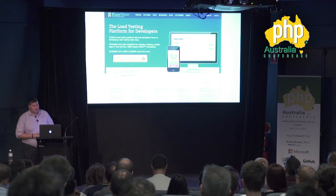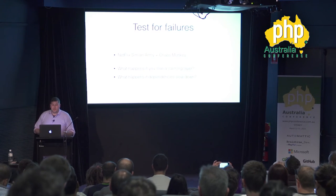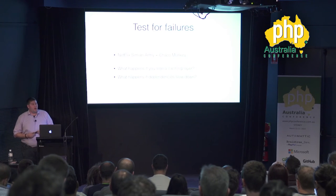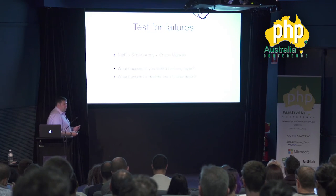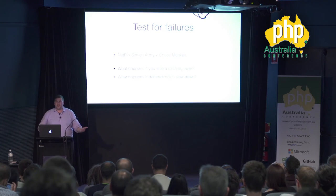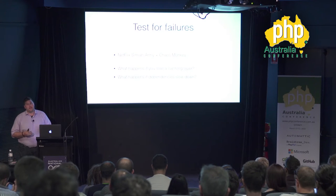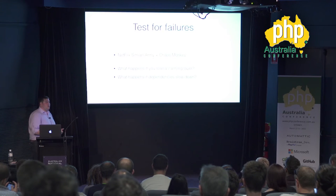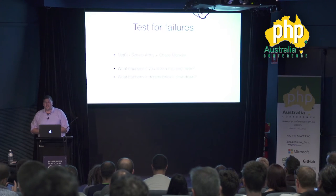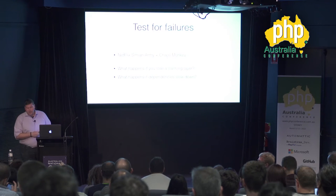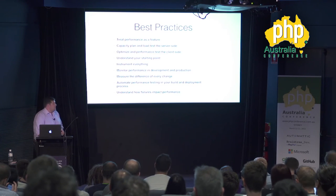A lot of people make the mistake of not testing for failures. Netflix released the Simian Army, including Chaos Monkey, which emulates failures inside AWS. Test for scenarios like: what happens if you lose your caching layer and traffic surges to the database? Can you handle it? What if your PayPal API slows down — do you time out and retry, or just wait? Hardware will always eventually fail and software will eventually have bugs, so test for those failures.